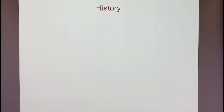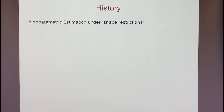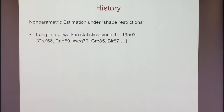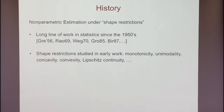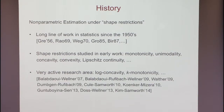The area of learning distributions under structural constraints has a long history in statistics. The area is called non-parametric estimation under shape constraints, and it started in the 50s. The first paper was by Grenander in 1956, for non-parametric density estimation of monotone densities. Since then the area has flourished, with many types of structure considered — log-concavity and others motivated by applications in the social sciences. Here is some list of papers in the mathematical statistics literature from the past few years.